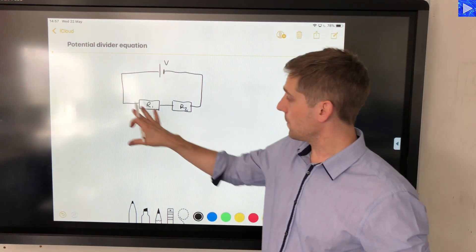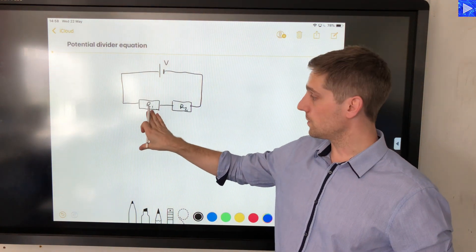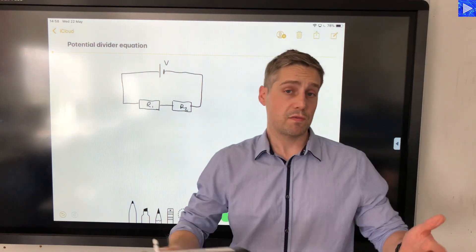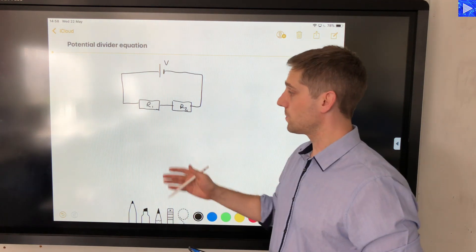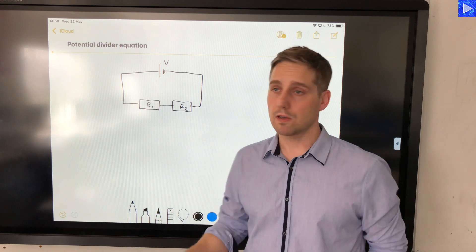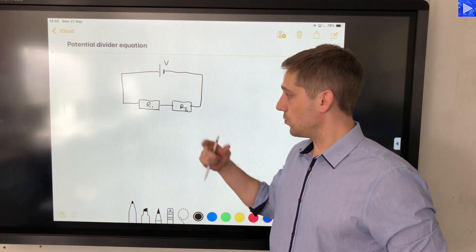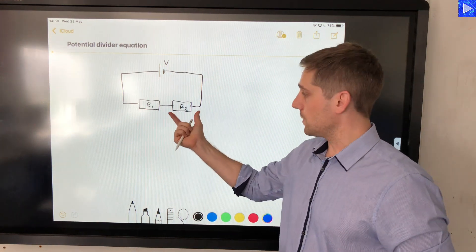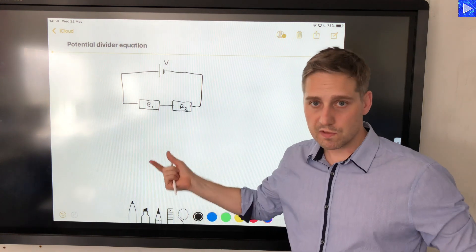We're going to consider this circuit here. We've got two resistances, R1 and R2. I'm just using fixed resistors here, but the same things would apply for problem solving with thermistors, LDRs, because all they're doing is adding another resistance in there. So if that was a thermistor, the same rules would apply.